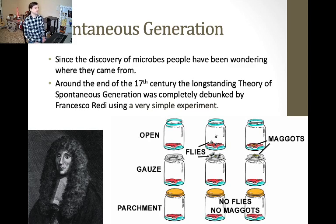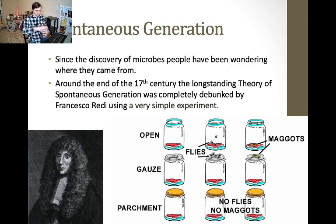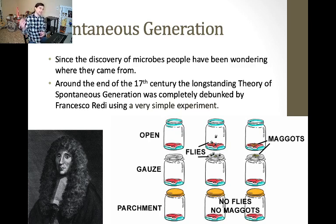Redi did this elegantly. He took three jars, each with a steak inside: one open, one covered with gauze, and one covered with parchment paper. He set them out to observe. The open jar allowed flies to come in and out — he could observe flies landing on the steak, laying their eggs, and the maggots developing.